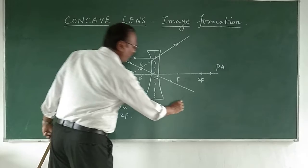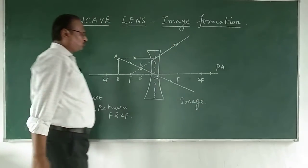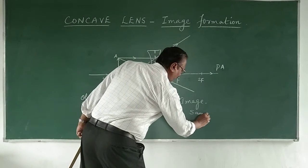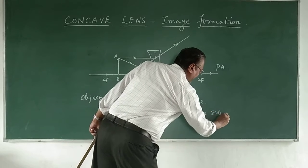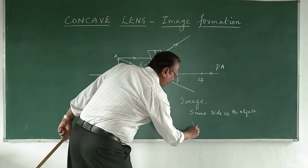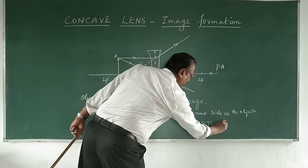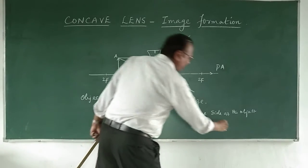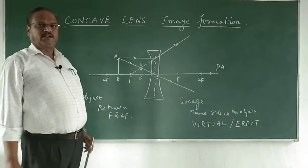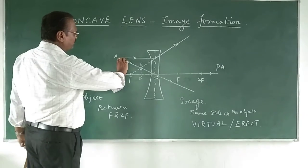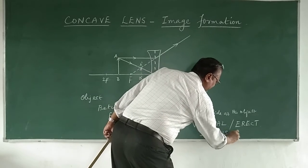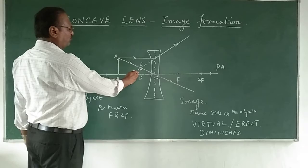Now look at the nature of the image and where it is formed. The image is formed on the same side as the object — whenever that happens, it is a virtual image. And whenever the image is virtual, it will always be an erect image. Now what about the size? The image is diminished — it has become small in size.